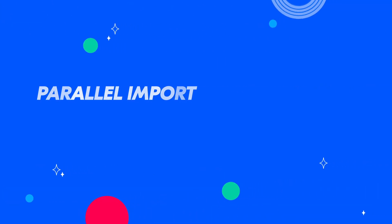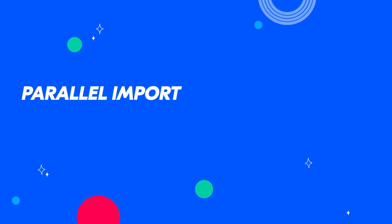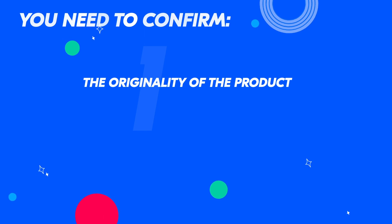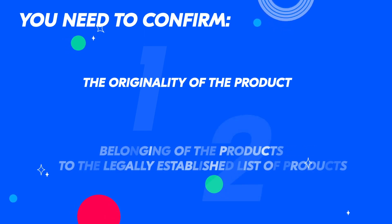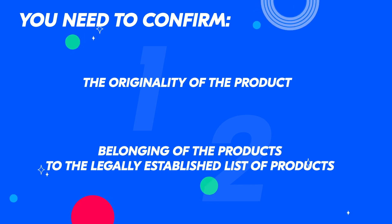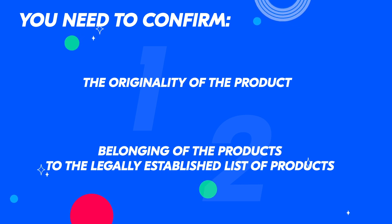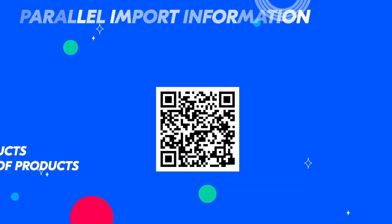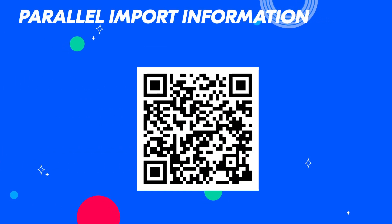If your product is included in the list of products for which parallel import has been legalized, you need to confirm the originality of the product and the belonging of the products to the legally established list. Please note that for products from the list, you no longer need to provide documents confirming the right to sell the brand on the territory of the Russian Federation. Using this QR code, you can learn more about parallel import.